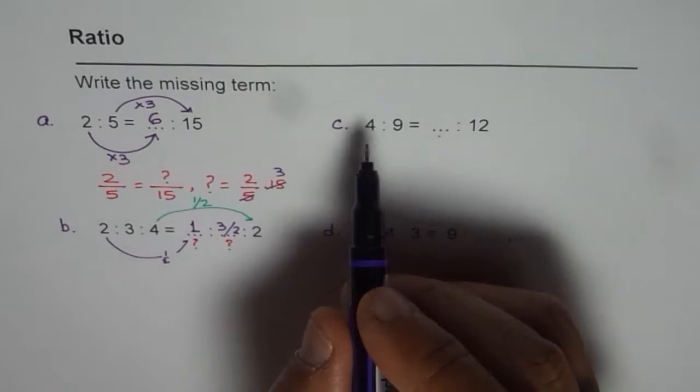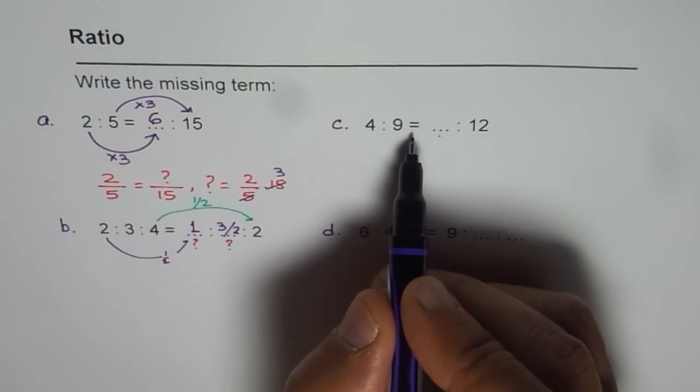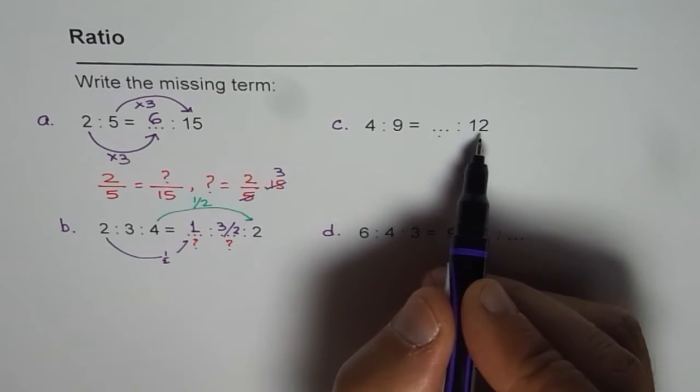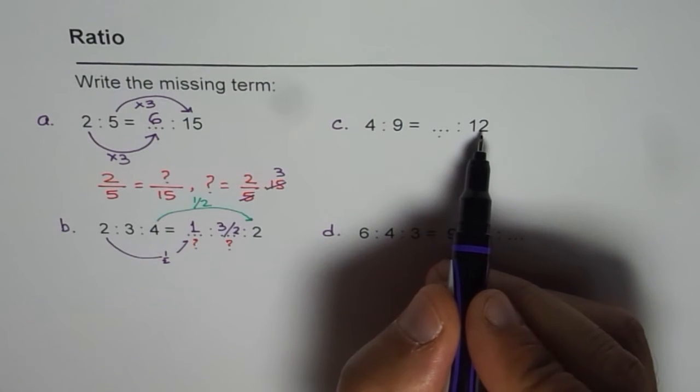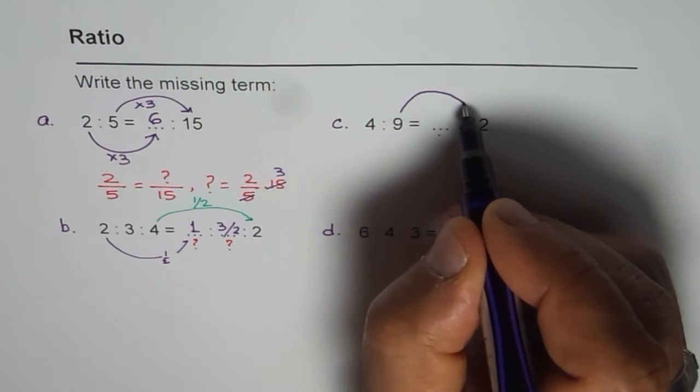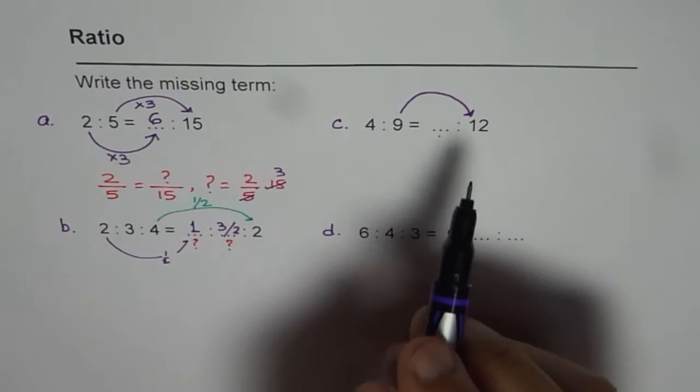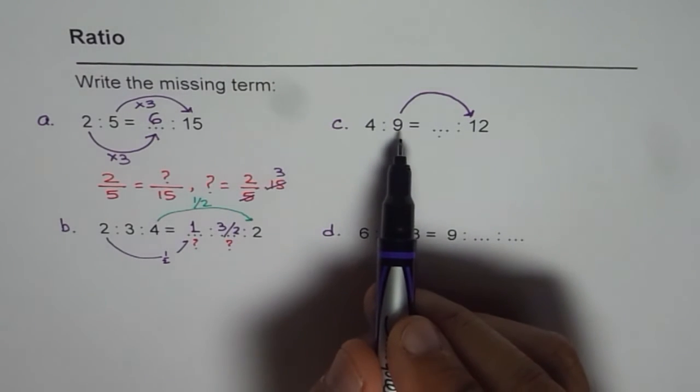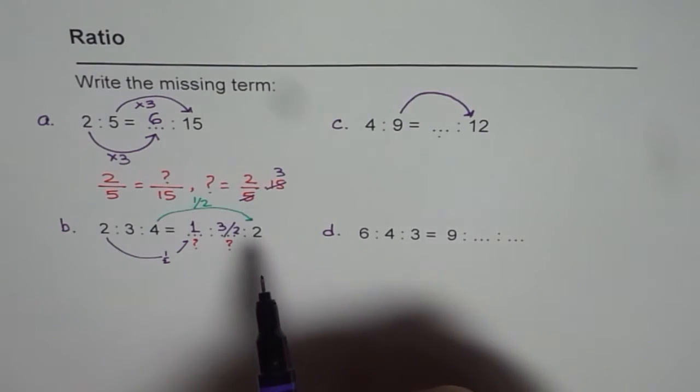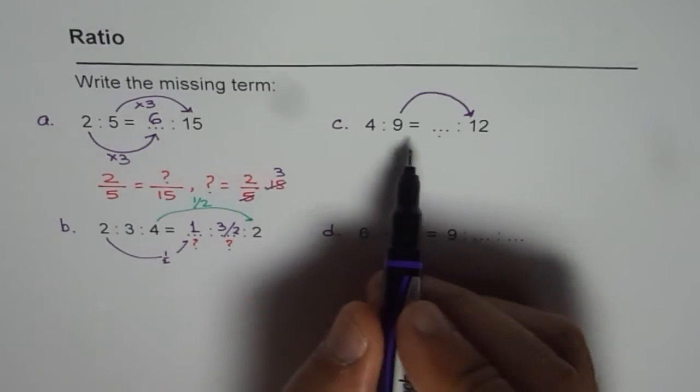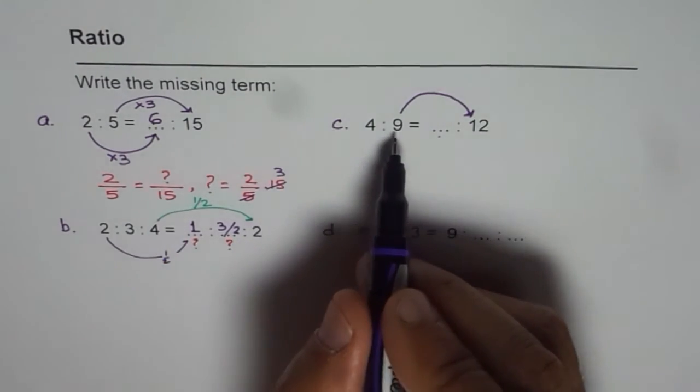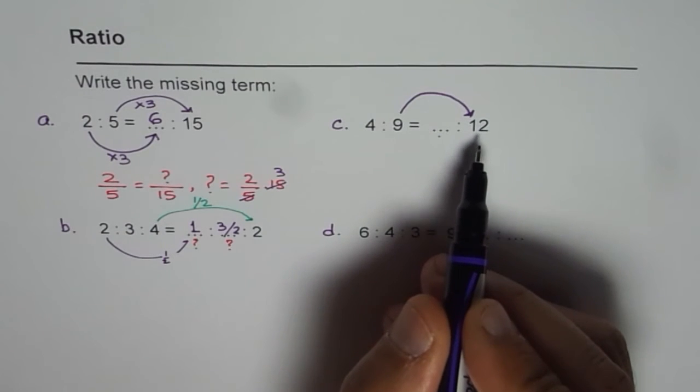Now here is the one which is 4 over 9 equals to something over 12. Now this 12 is not related with 4 but is related with 9. So that is how it is related. We need to figure out how do I get 12 from 9?